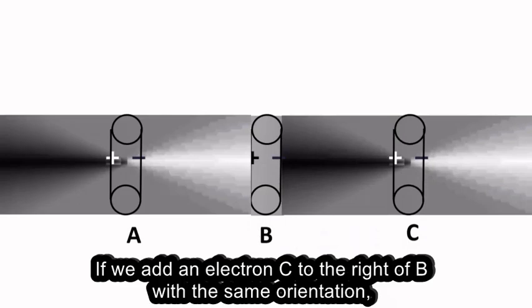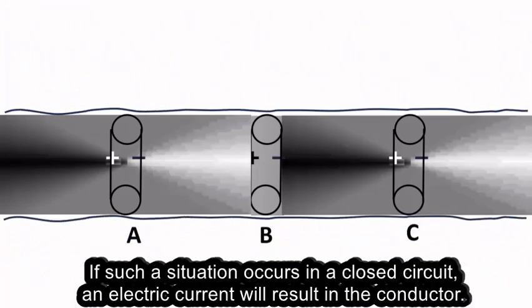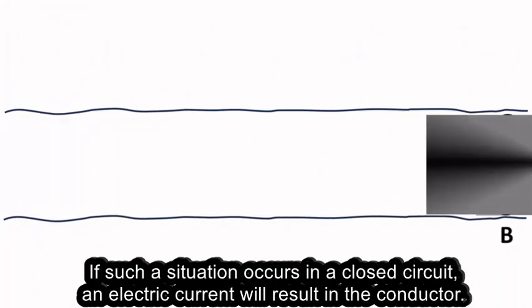If we add an electron C to the right of B with the same orientation, then B is in a local gravitational field and experiences gravitational acceleration to the right. If such a situation occurs in a closed circuit, an electric current will result in the conductor.